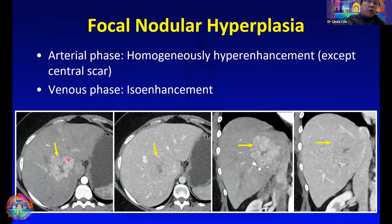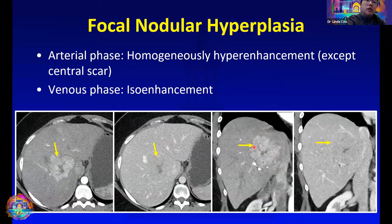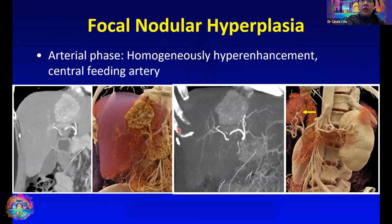Here's an example of a focal nodular hyperplasia in which we see a fairly homogeneously enhancing mass in the liver, with the exception of the central scar. It is unencapsulated, and then on the venous phase, the mass becomes isodense relative to the background liver. On the coronal, you can appreciate the same imaging characteristics — pretty homogeneous enhancement with the exception of the central scar. We can use the 3D images to also accentuate the conspicuity of the mass relative to the background liver.